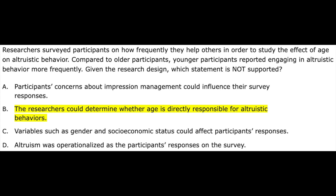Take this standalone question as an example. Remember, an experimental design is the only way to assess a causal relationship. This is not an experimental design — we're asking participants to self-report how often they engage in altruistic behavior. There are so many variables that could confound this. What if the younger generation is more apt to lie and reports more altruistic behaviors even if they don't do them? Or the way answer B is worded makes it sound like age controls altruistic behavior — what if it's actually a generational thing and people born in the nineties are just more altruistic throughout their lives than boomers?